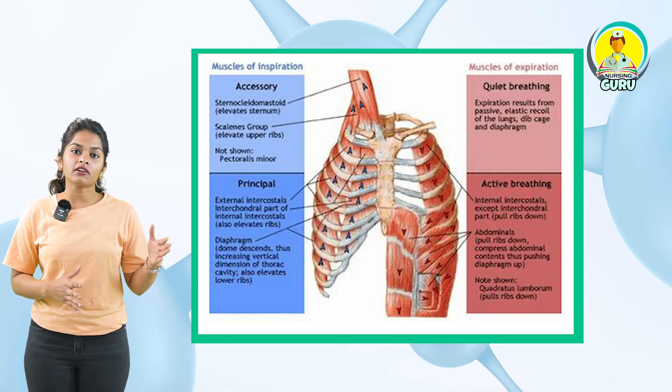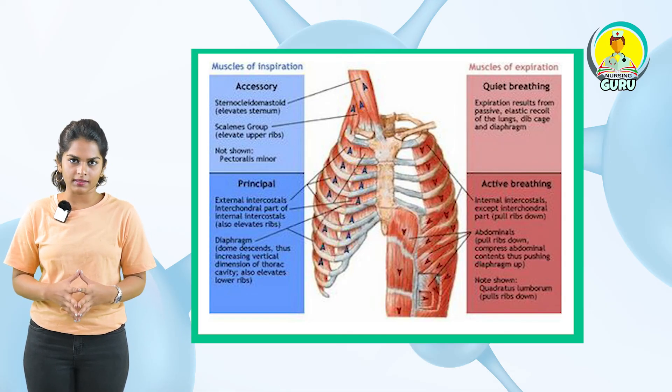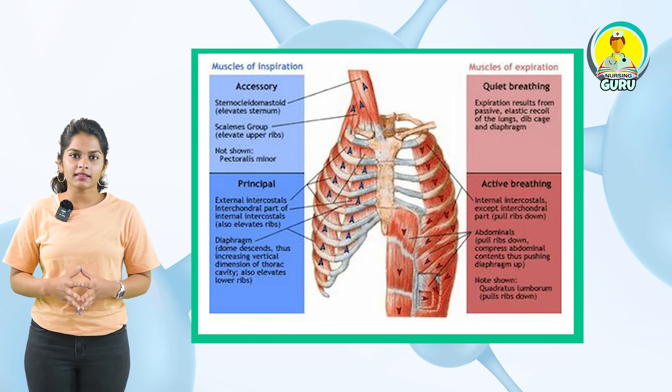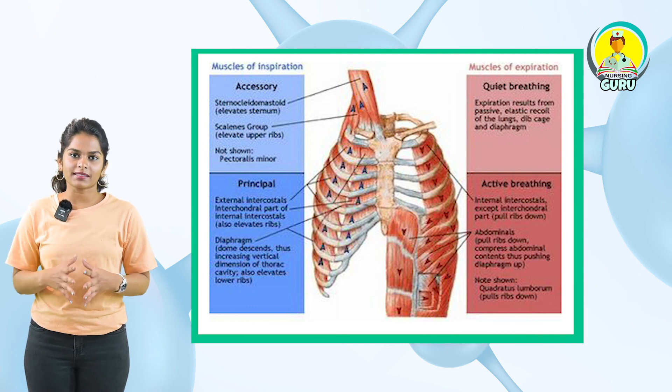Here we are with our last topic — the muscles involved in respiration. We have basically the primary and the accessory muscles. The primary muscles include the internal and external intercostal muscles and the diaphragm. The accessory muscles include the pectoralis, scalenes and the sternocleidomastoid muscle. To briefly recap today's topic: in respiration we have learned about the process of respiration, the structures involved, the anatomy of lungs, transport of gases, and the primary muscles involved in respiration. Thank you.